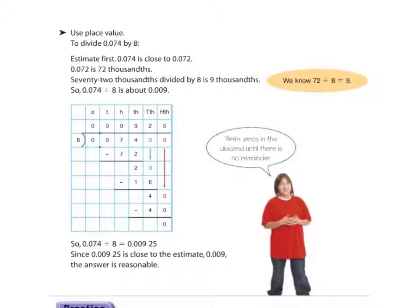Now, if we want to use algorithm method, which works quite well, we just work our way through. So, we have our very small decimal number. 0.074, divided by 8. So, we're going to work our way through.